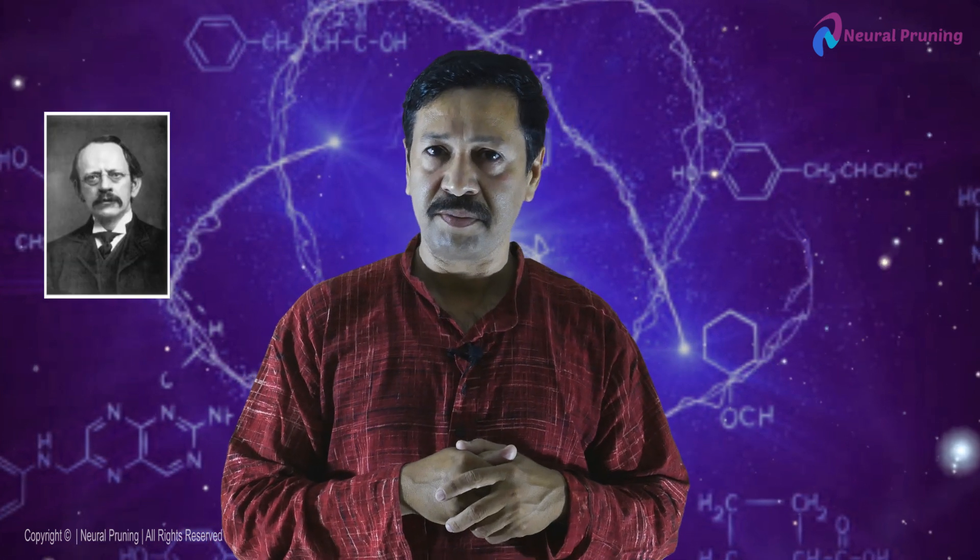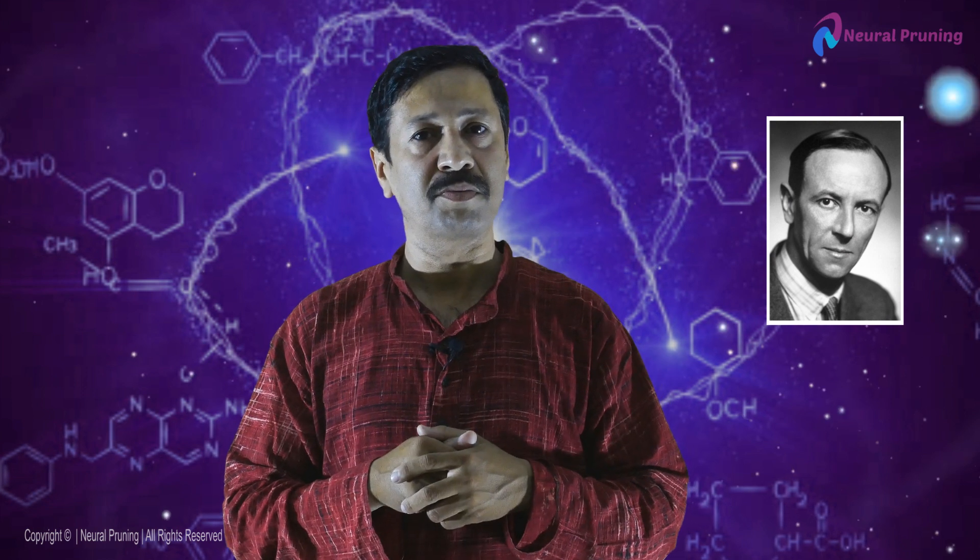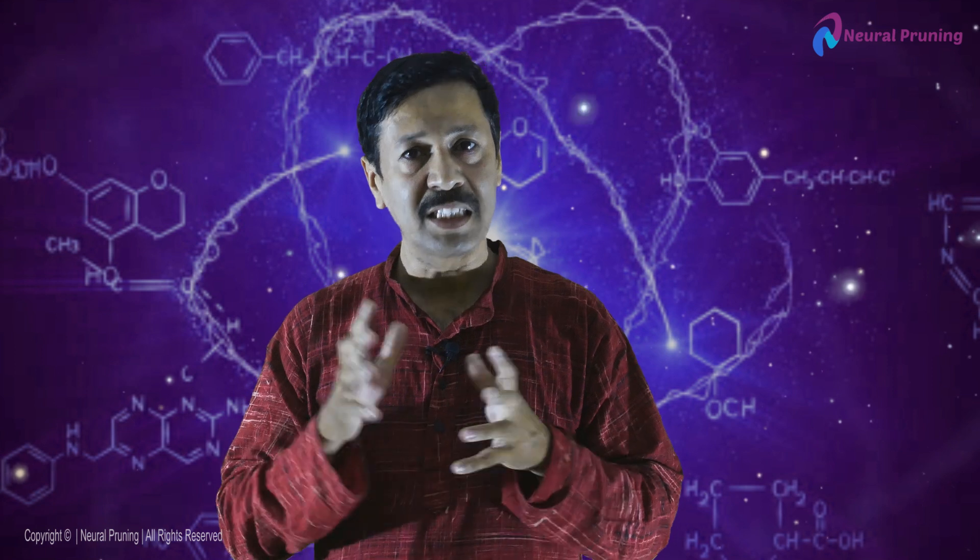Who discovered these particles? J.J. Thomson conducted the cathode ray experiment and discovered the negatively charged particle called the electron — the lightest particle in the atom. The existence of the proton was established by the experiment conducted by E. Goldstein, who conducted the anode ray or canal ray experiment. Later, Ernest Rutherford and his students discovered the nucleus. In 1932, James Chadwick discovered the neutron. Thus, three fundamental particles were discovered by scientists.